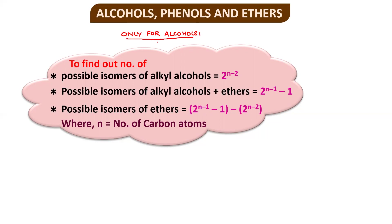Important formulas for counting isomers — only for alcohols and ethers. The number of possible alkyl alcohol isomers is 2^(n−2). The number of possible alkyl alcohol plus ether isomers is 2^(n−1) − 1. The number of possible ether isomers alone is [2^(n−1) − 1] minus 2^(n−2). Here, n is the number of carbon atoms. These formulas are important for competitive exams and olympiads.